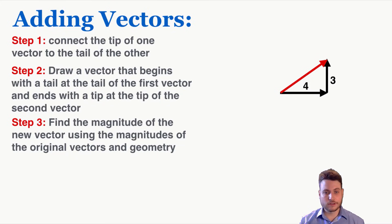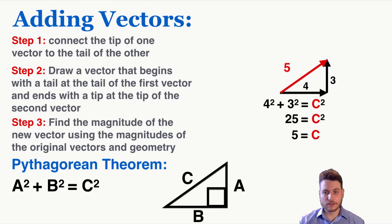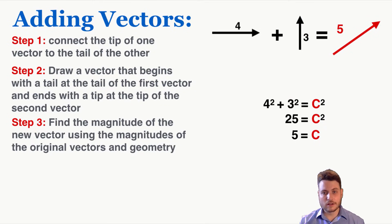Step three is to find the magnitude of the new vector using the magnitudes of the original vectors and geometry. In this case, the vectors form a right triangle, so I can use the Pythagorean theorem — a² + b² = c². Plugging in my numbers gets a final vector value of 5. We'll use the Pythagorean theorem a lot because vectors forming right triangles come up frequently. The direction of the sum matters a lot, so when adding two vectors you must consider both their size and direction and use this three-step process.